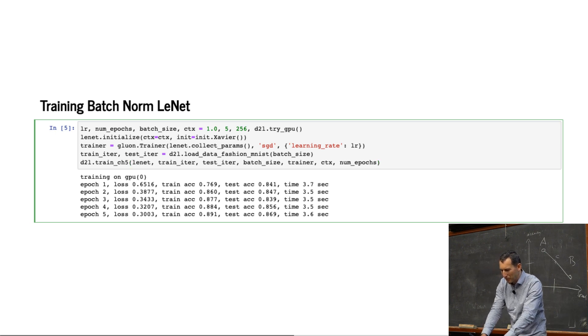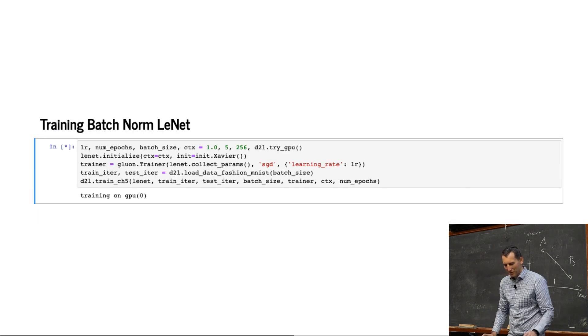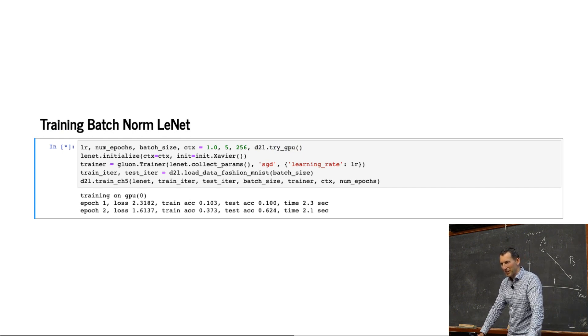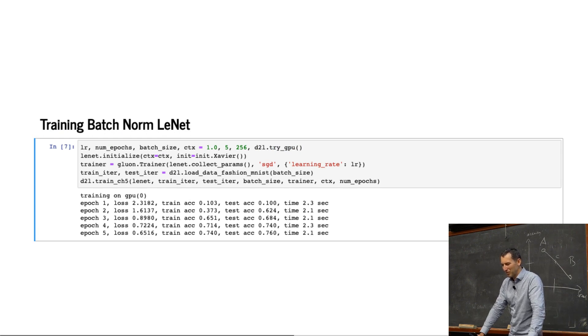So remember before that we had an accuracy of 0.869. And it took about 3.6 seconds. Let's see what happens now. Okay, so it runs faster because it doesn't invoke the batch norm. That's to some extent because we ran the batch norm by hand. And it works a lot worse. Okay, so batch norm is good for you.